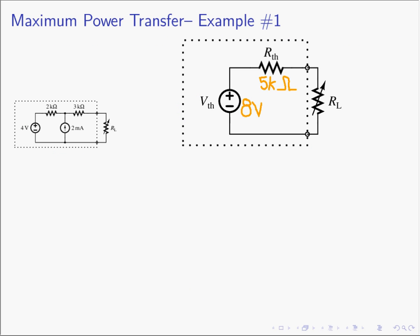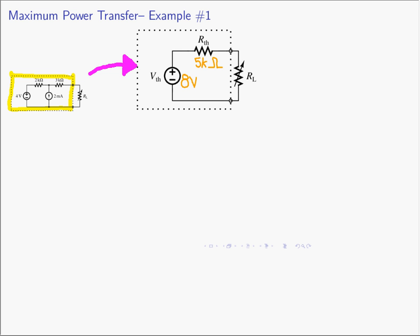Let's do an example. Going back to one of the previous lectures on Thevenin equivalent circuits — you can review those details in that video — we had the circuit here in the box. As we found when computing the Thevenin equivalent, it turns out to be an 8-volt voltage source in series with 5 kΩ. So the question is: what value of R sub L do I attach to my circuit to get the greatest maximum possible power? Once we find the Thevenin equivalent circuit, we know that when R sub L is 5 kΩ, it will absorb the greatest possible power from the Thevenin circuit — and therefore from the original circuit.